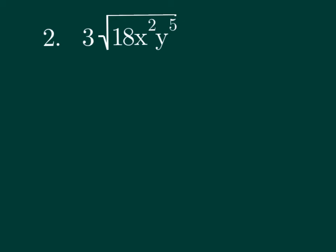My second problem here. Notice I already have a 3 in front. I've got to simplify the inside, though. Let's do a different color here. 18. Well, 18 is 2 and 9. And 9 is 3 and 3. Well, there's a pair.